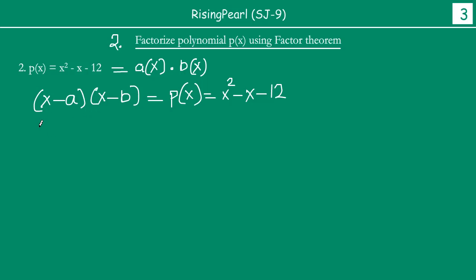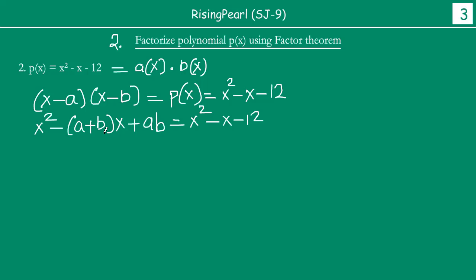We expand it as x squared minus ax plus bx plus ab. If you compare the coefficients, we see that ab is equal to minus 12. This is an important thing to note. When you write ab equal to minus 12, you will try to find out the factors of this number. If you ignore the minus and take it as positive 12, the answer will be different. So you have to be very careful of these little things.